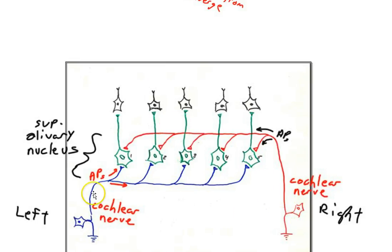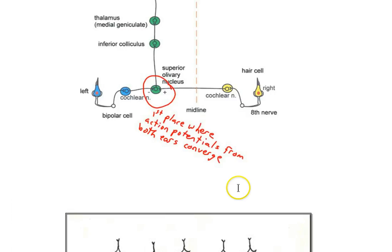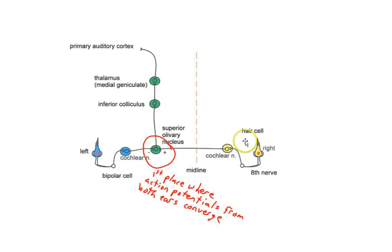We make two assumptions: action potentials travel at the same speed in both nerves, and the target cells — one through five — only respond when both of their inputs are simultaneously active. This is spatial summation. With those two assumptions, it becomes clear how this system can compute the delay of activation between the two auditory nerves.